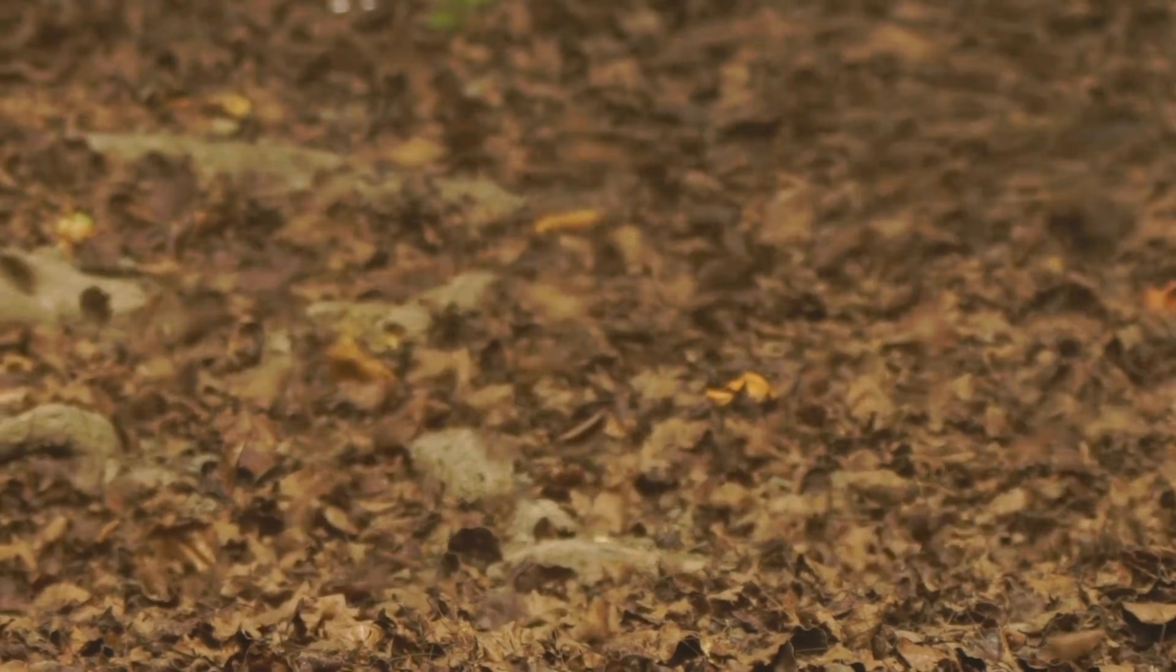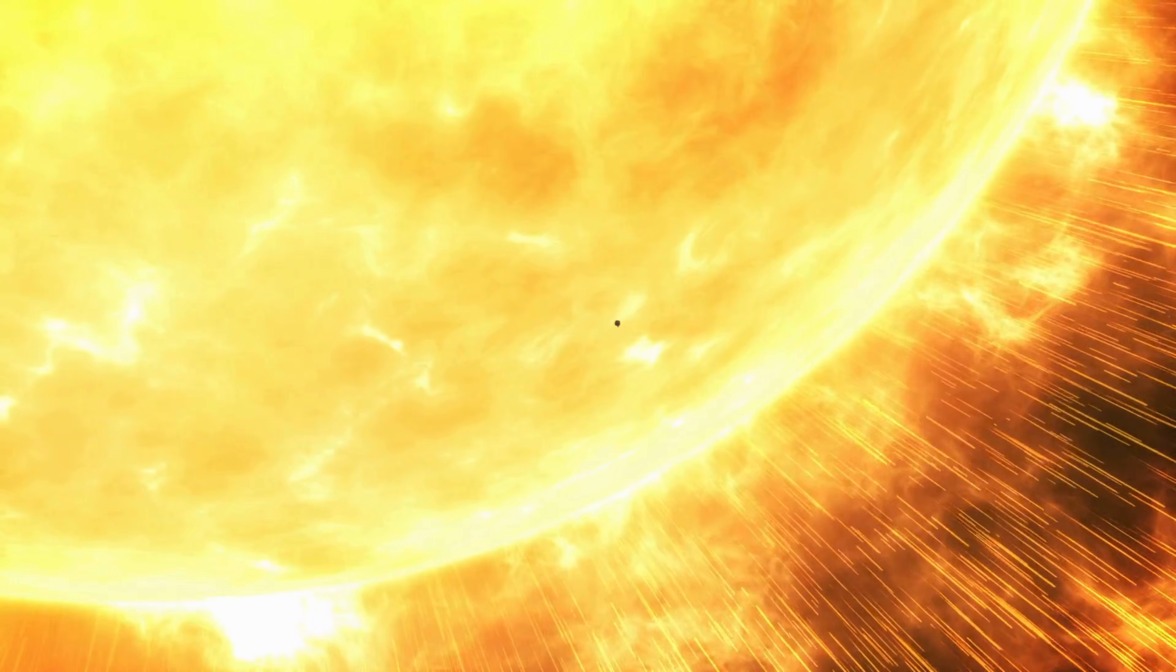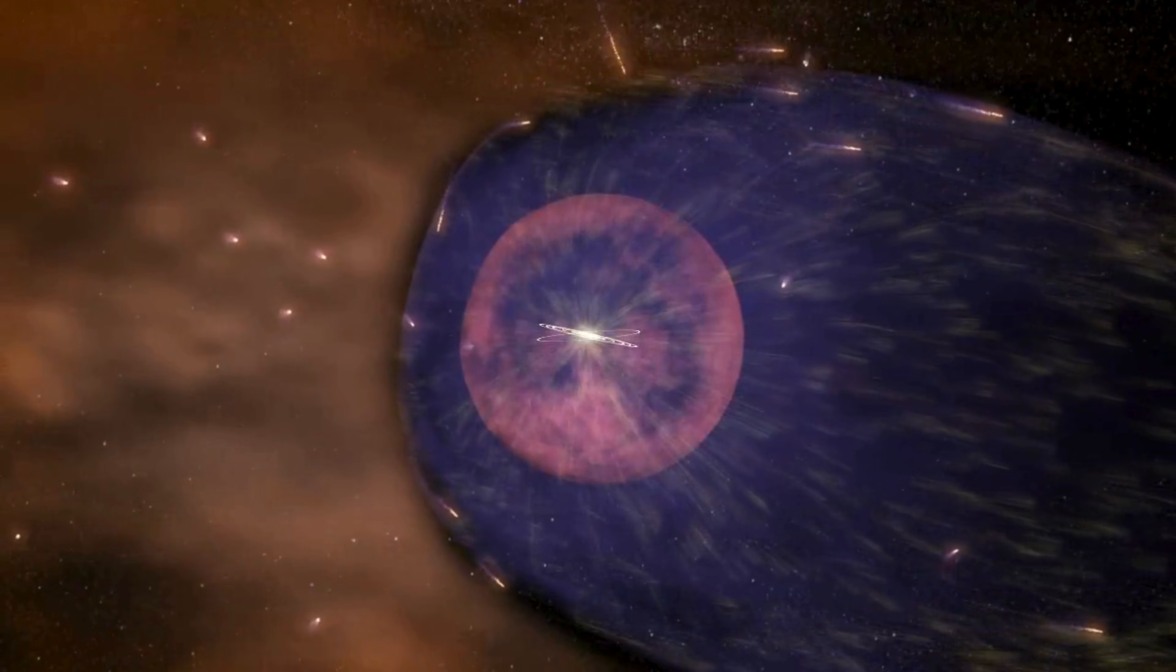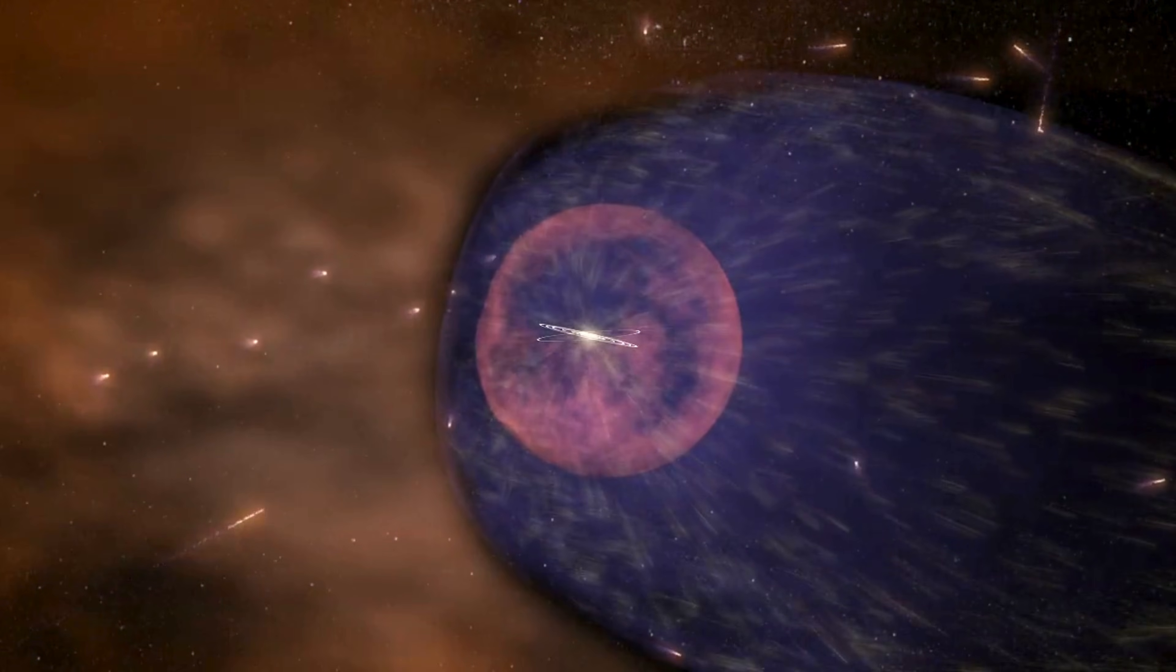Think of it like a windstorm, but instead of leaves and branches, it's sending out particles and a magnetic field. This solar wind pushes against anything that's not part of our solar system, like particles from other stars.